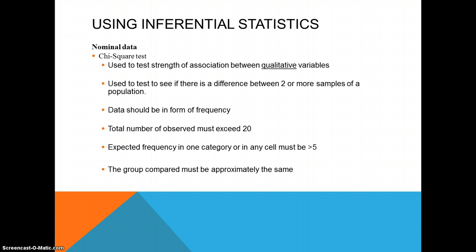The data on chi-square is in the form of frequency, and we do have some restrictions on chi-square. First of all, we must have an N, a number of observations, that must exceed a total of 20. And each cell that we're looking at in a chi-square must have a frequency greater than five. And we want to make sure that the groups that we're comparing are fairly similar in number.